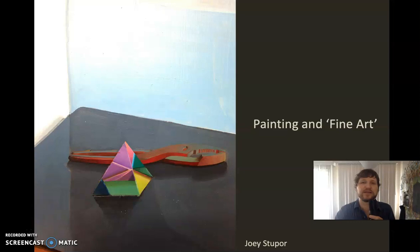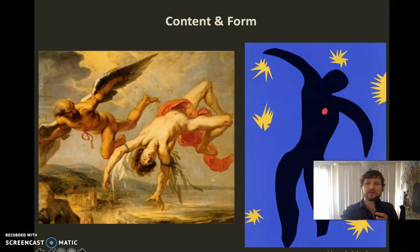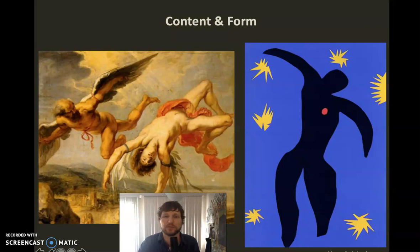Every painting, every work of art, every visual work has content and form. Pretty much every art form ever has content and form — this is the most basic breakdown. Content is what you're trying to say; form is how you say it. The content in both of these pictures is the Icarus story.